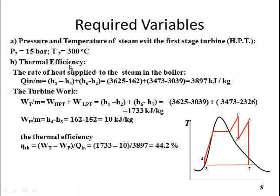To find the thermal efficiency, we first find the rate of heat supply. There are two sections where heat is added in this cycle: in the boiler from state 4 to state 1, giving H1 minus H4; and in the reheat section, giving H6 minus H2. The total heat supply to the steam is approximately 3900 kJ/kg.